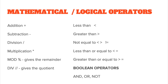Now let's look at mathematical and logical operators. Addition is a plus, subtraction is a minus, division is a slash, and multiplication is a star. There are two additional ones: mod and div. Mod is the remainder from a division and we use the percentage sign for that. Div uses two slashes and gives the quotient — the number you divide by. Less than and greater than signs are straightforward. Not equal to is the exclamation mark and equal sign together. Boolean operators are and, or, and not.